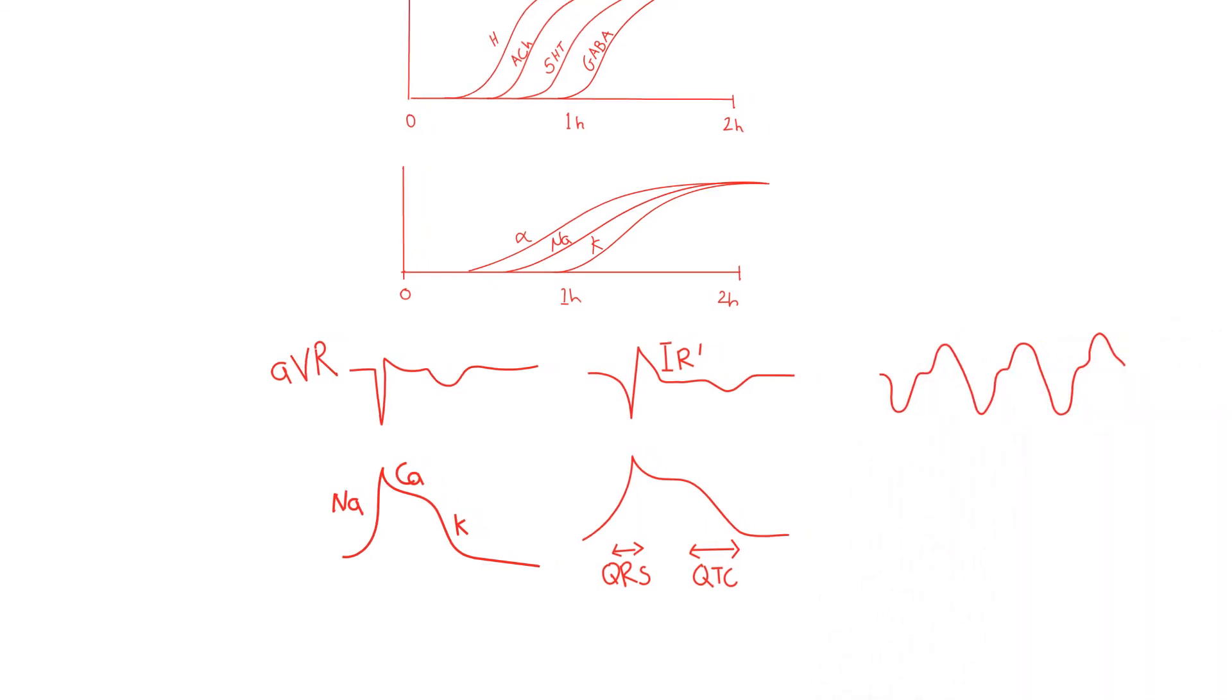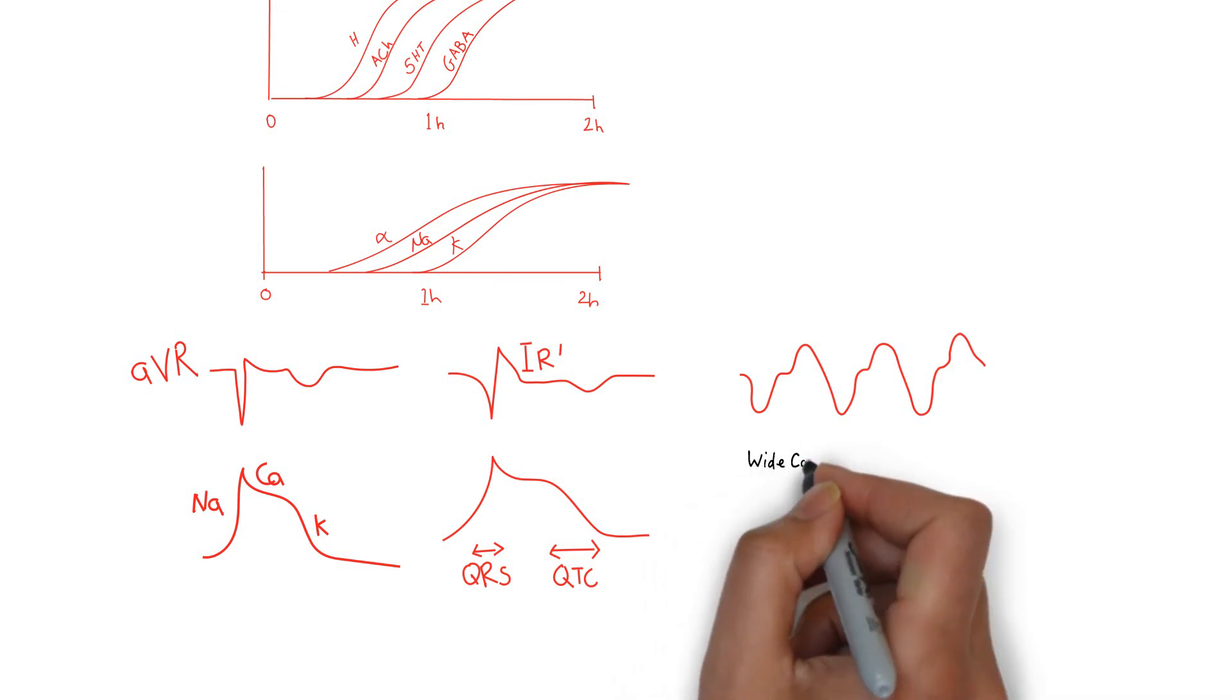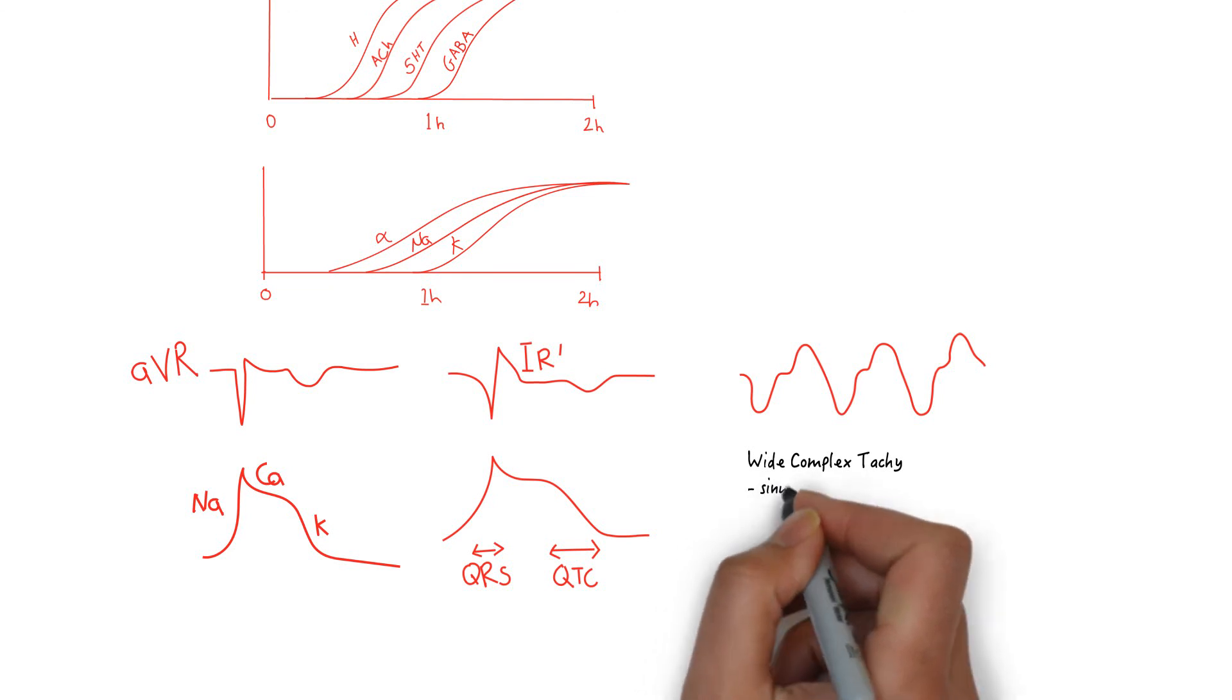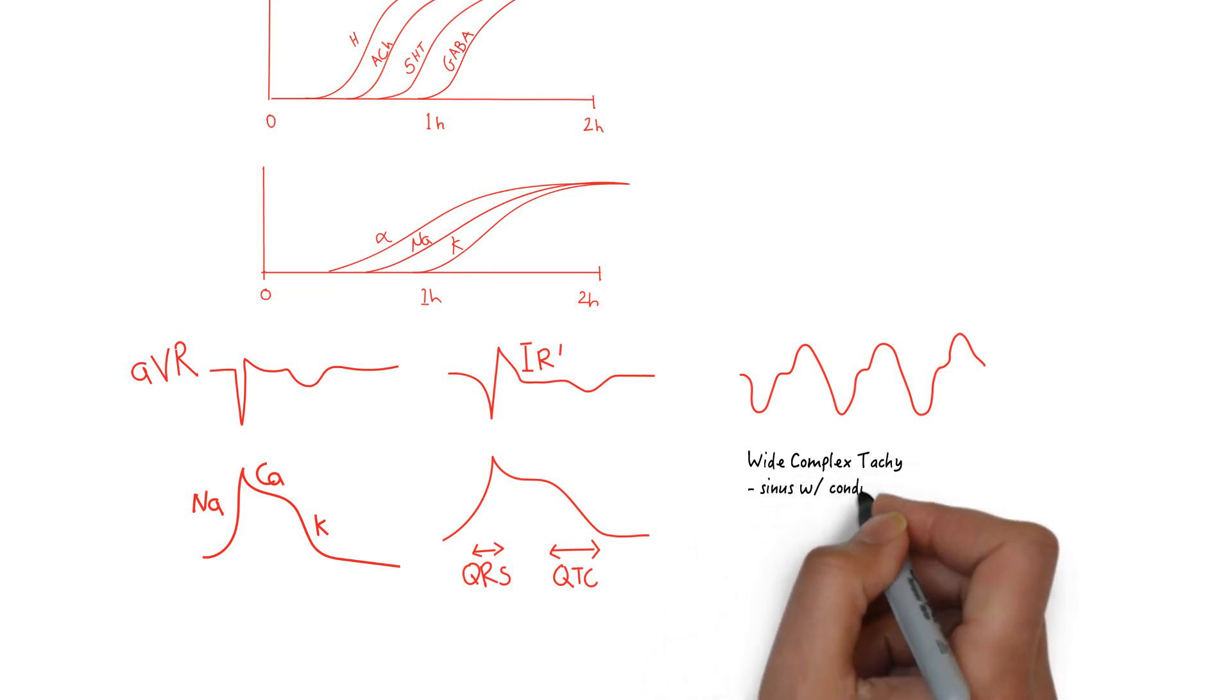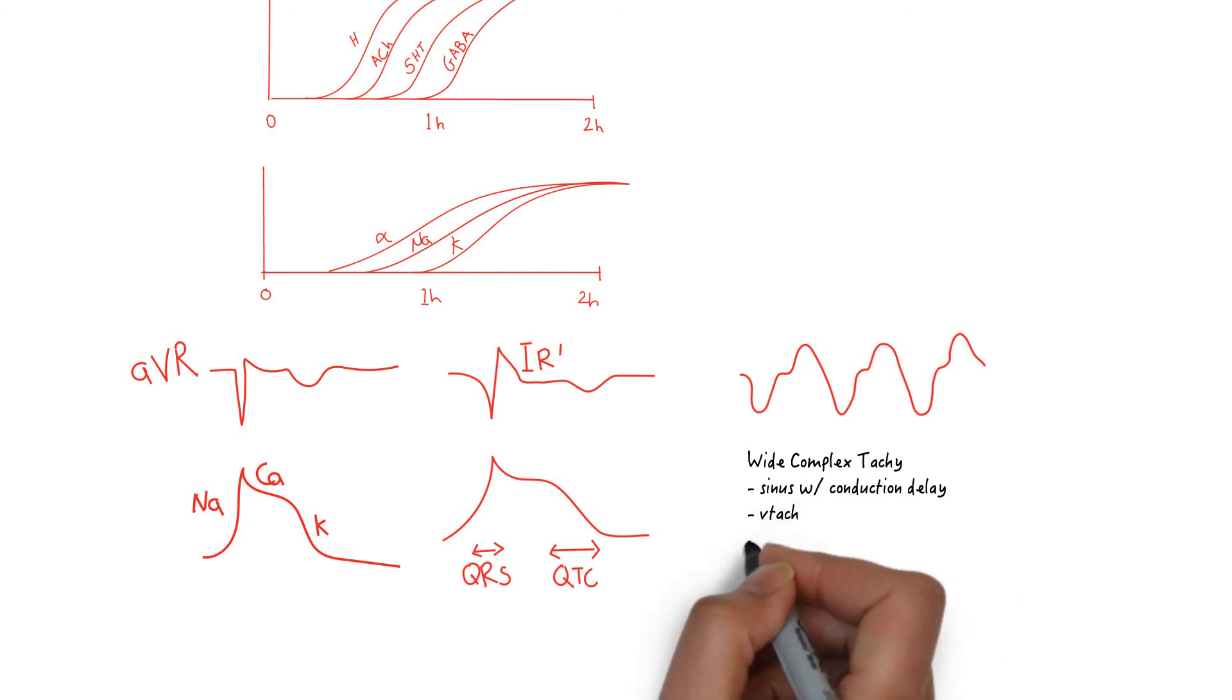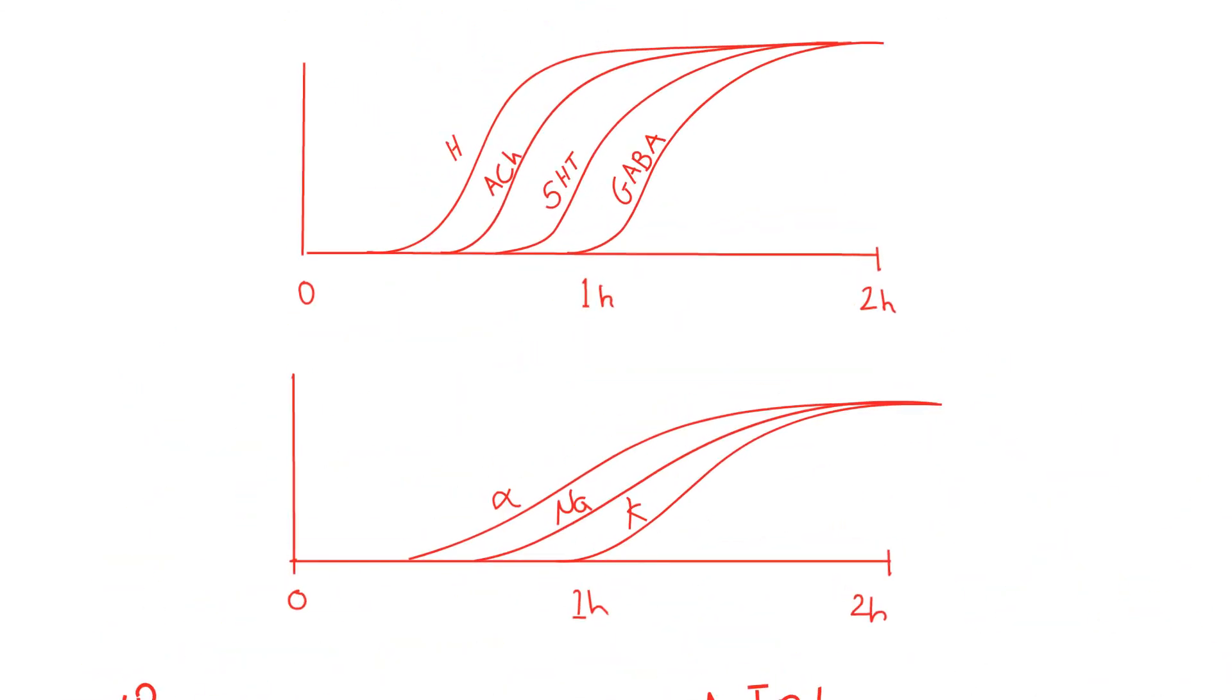The natural history of TCA overdose culminates in a wide complex tachycardia, which is most likely sinus tachycardia with conduction delay. VTAC is always on the differential but less common. Lastly, torsades is possible given the prolonged QTC but much more unlikely given the tachycardia. The patient's clinical status can degenerate into cardiac arrest, which will unlikely respond to ACLS recommendations of cardioversion or amiodarone.